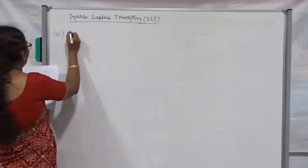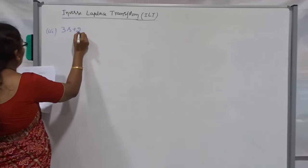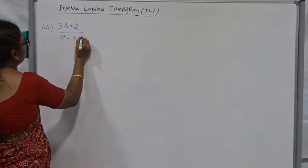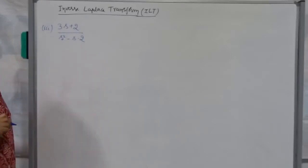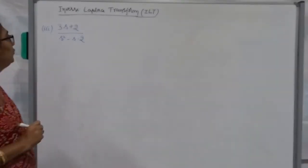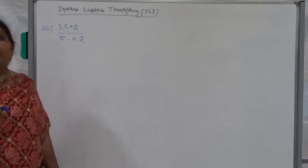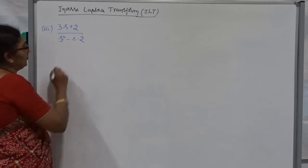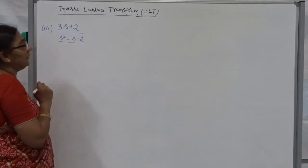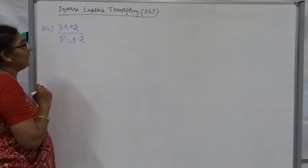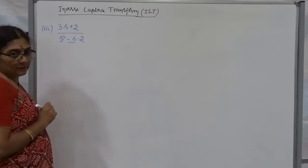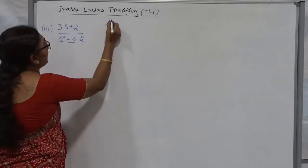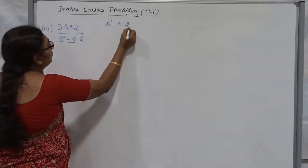The third problem is: (3s + 2) divided by (s squared minus s minus 2). I already told that whenever having a denominator in the form of a quadratic with s in the numerator, it is better to go for the complete the square method. Here, a squared is the first term, the s term is the 2ab term which is minus.